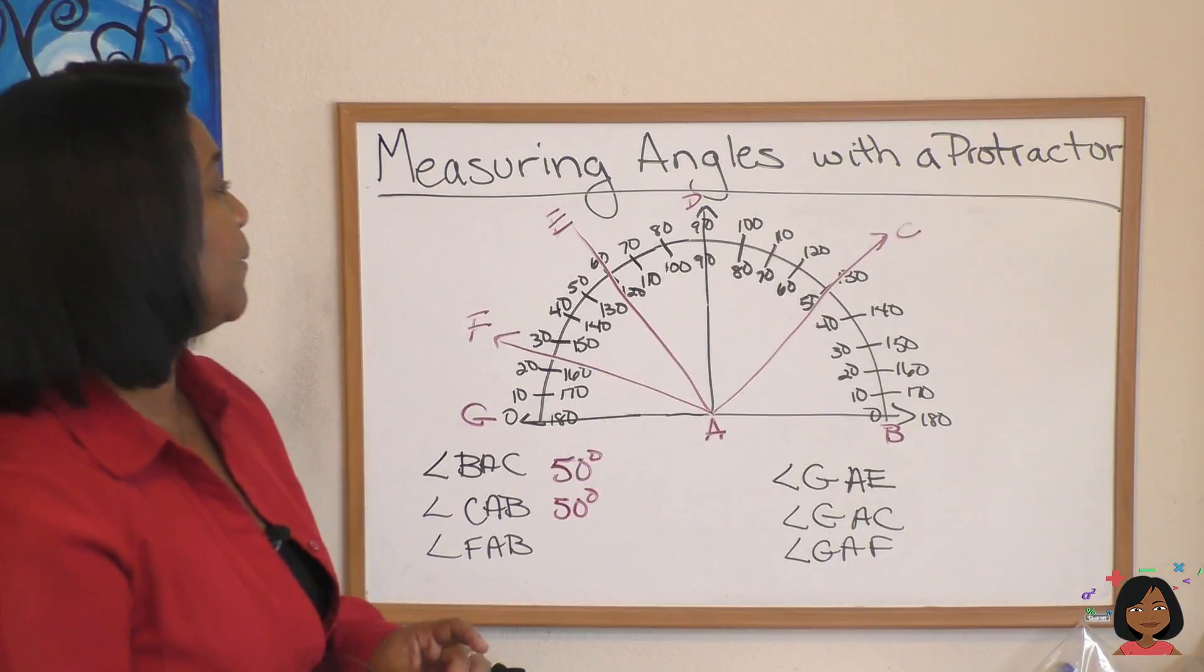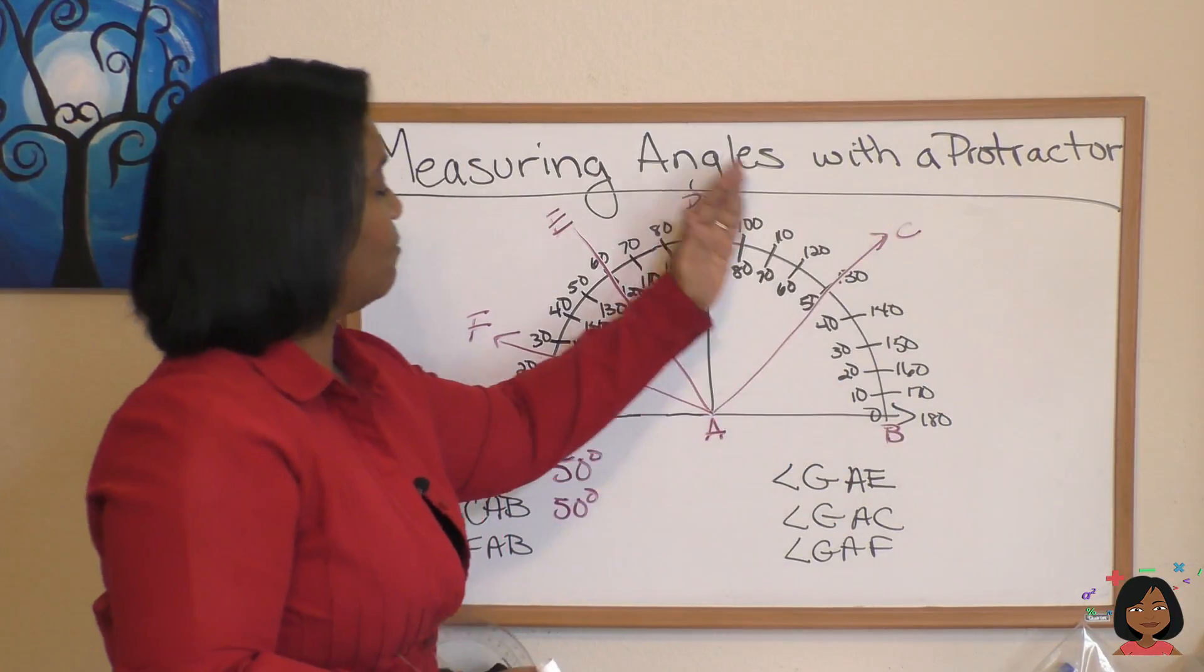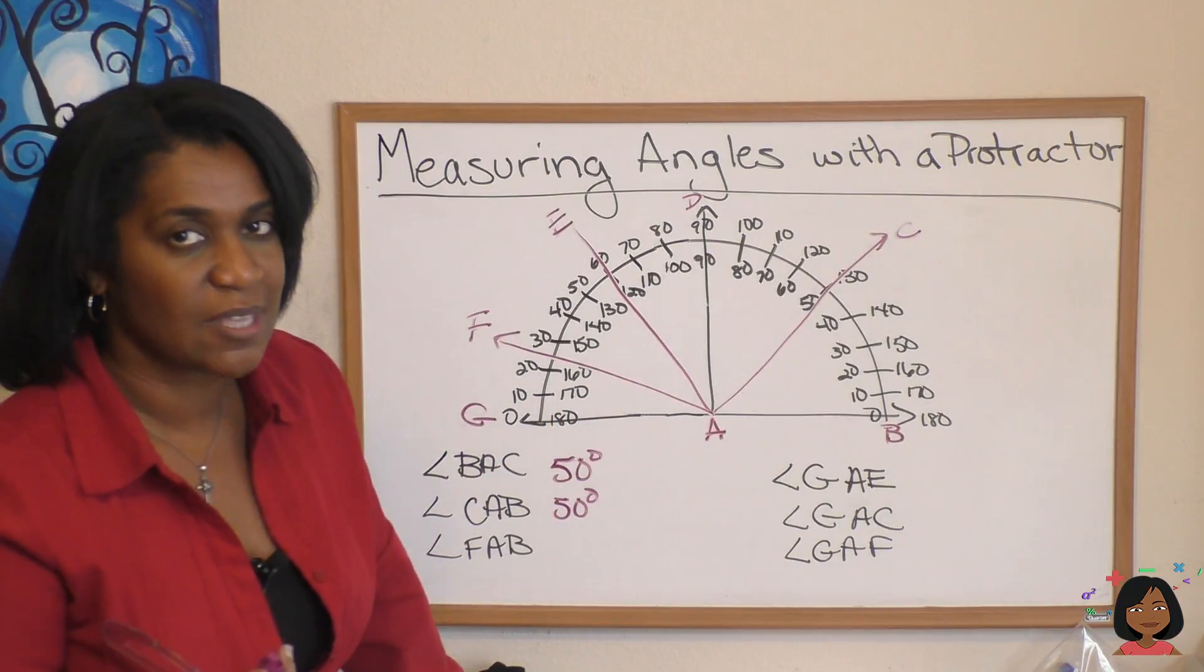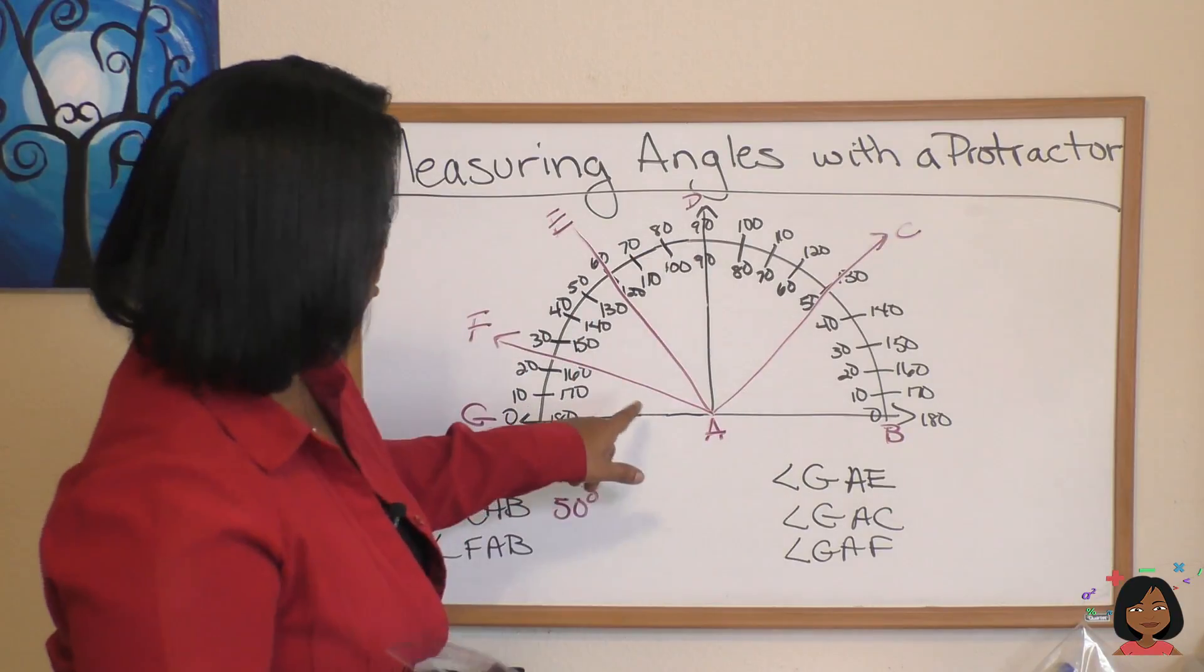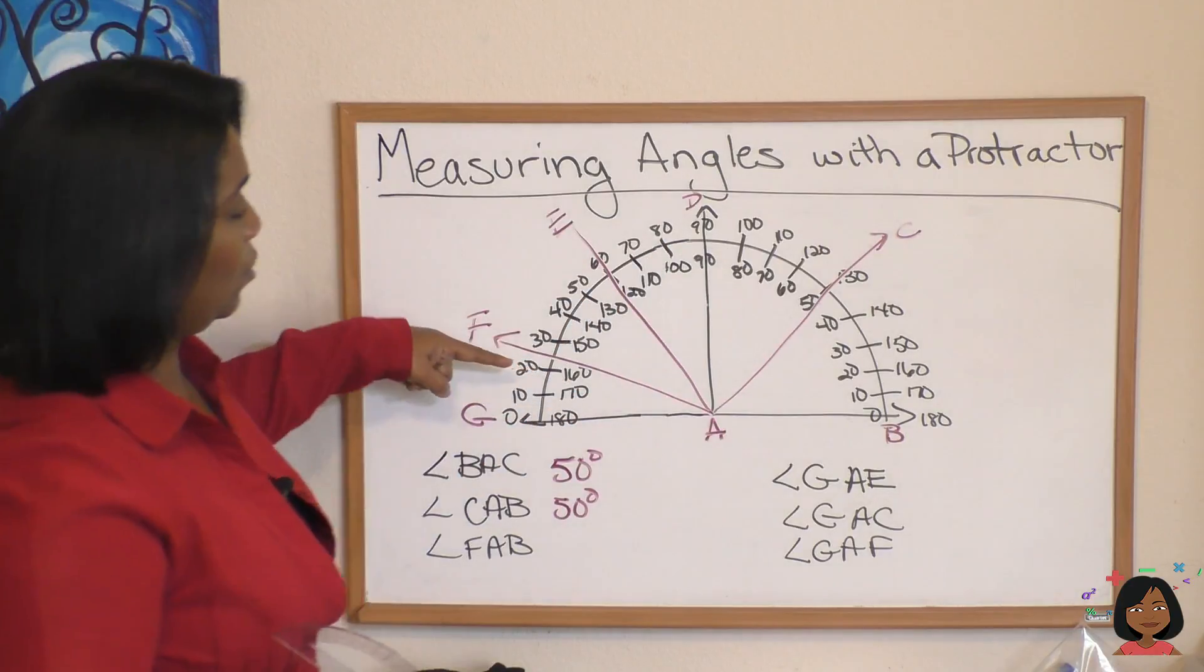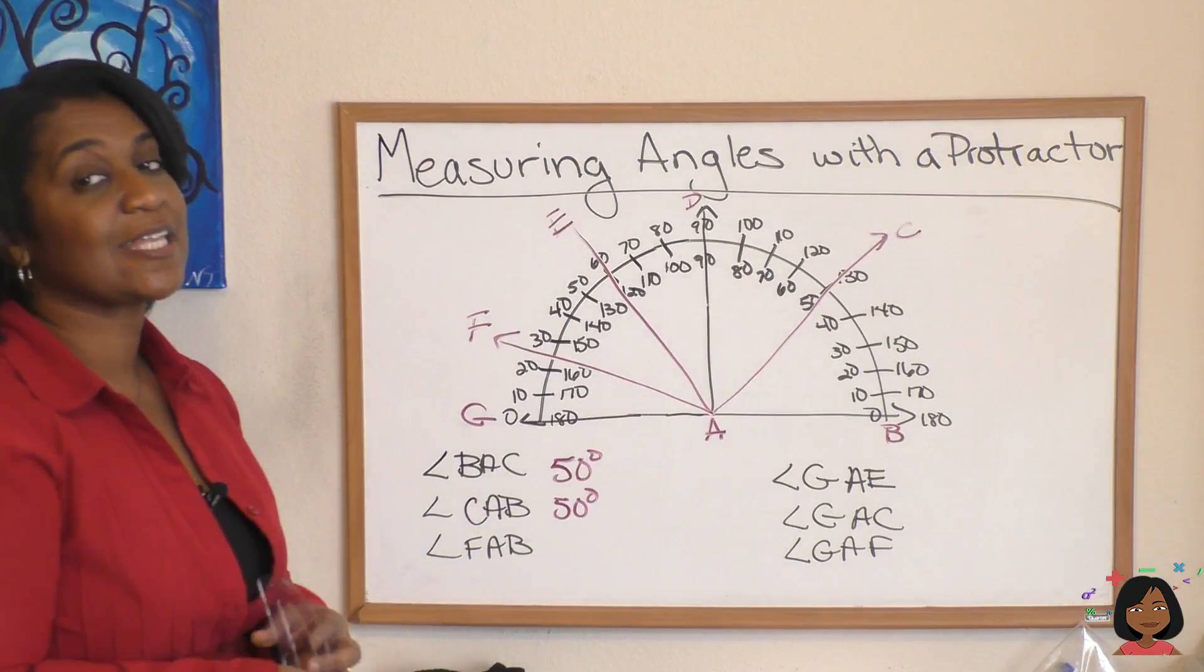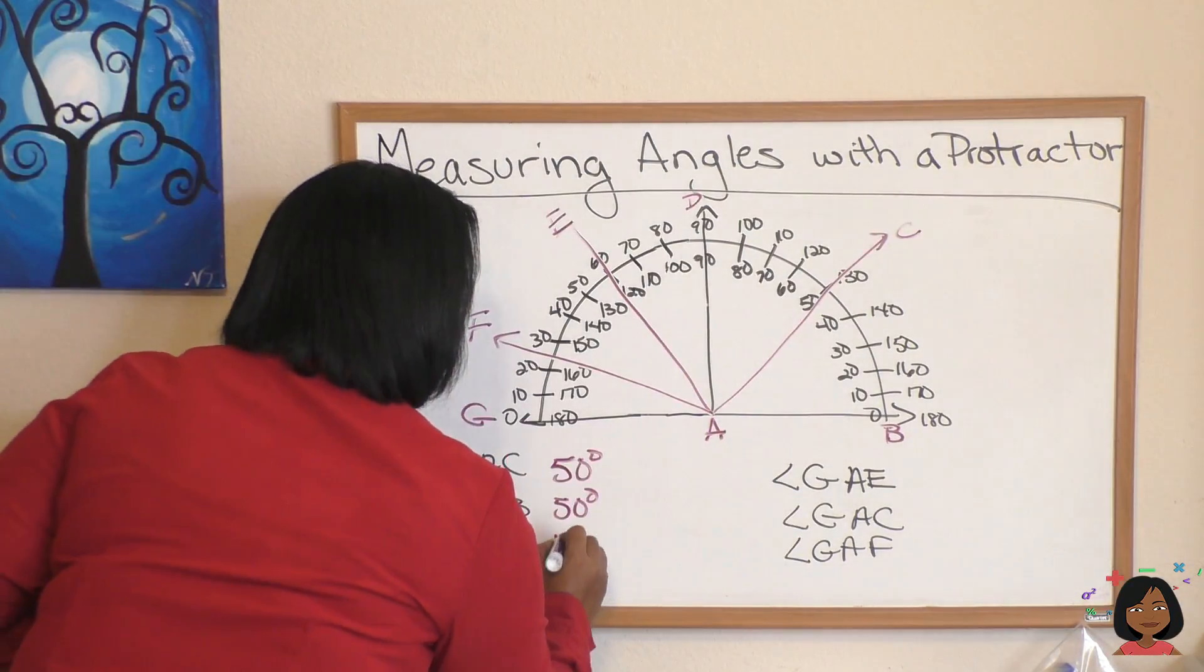What about FAB? We can see it starts here, measures up all the way to here. That is what kind of angle? It's an obtuse angle, more than 90 degrees. So we're going to use the inside and go all the way to, now this is between the 150 and 160. We're going to estimate and say that it's 155 degrees.